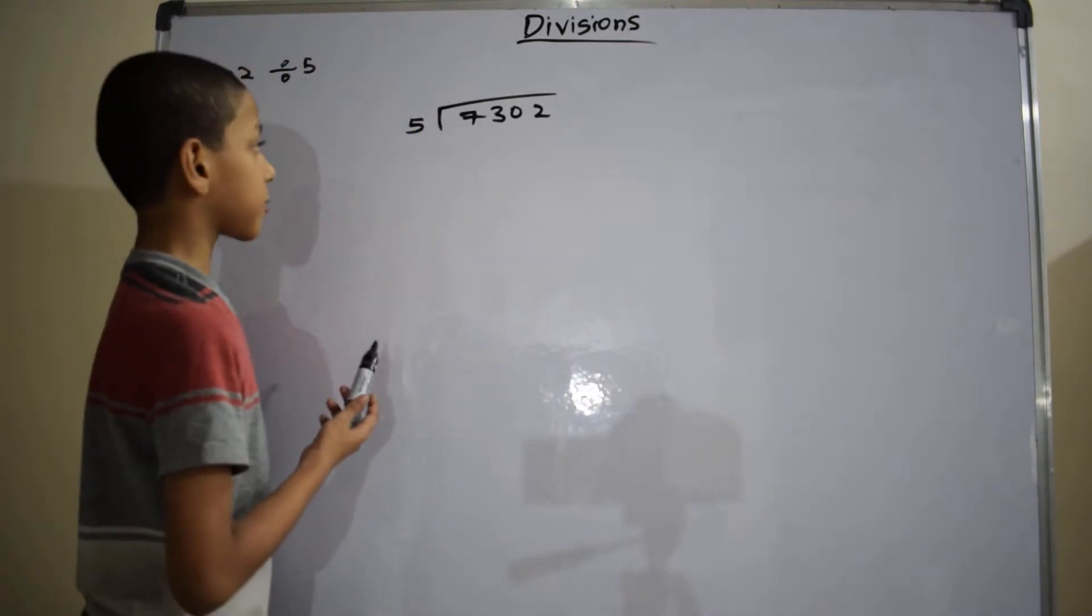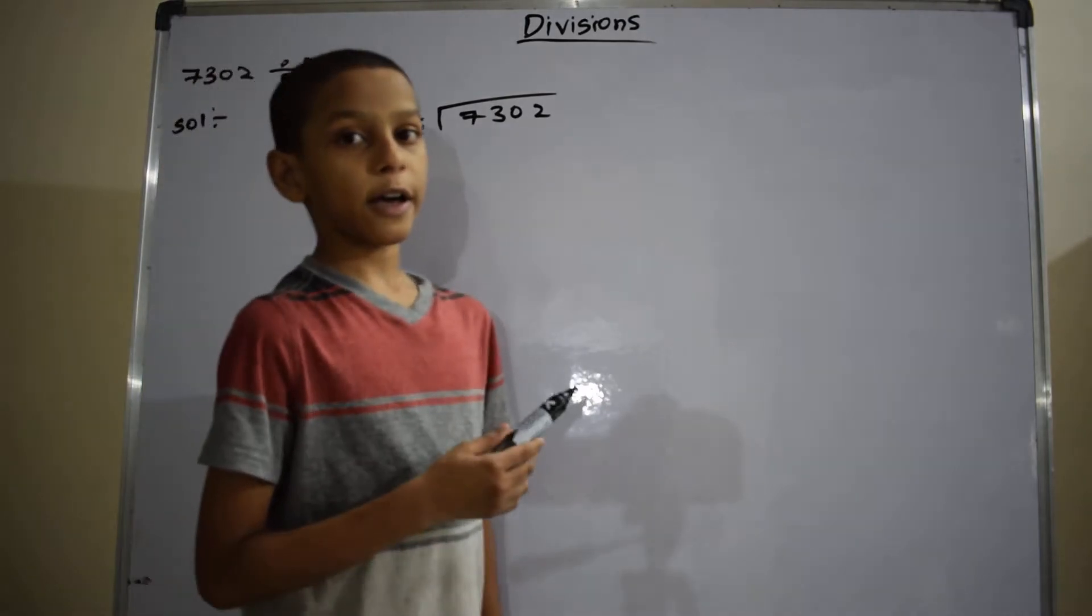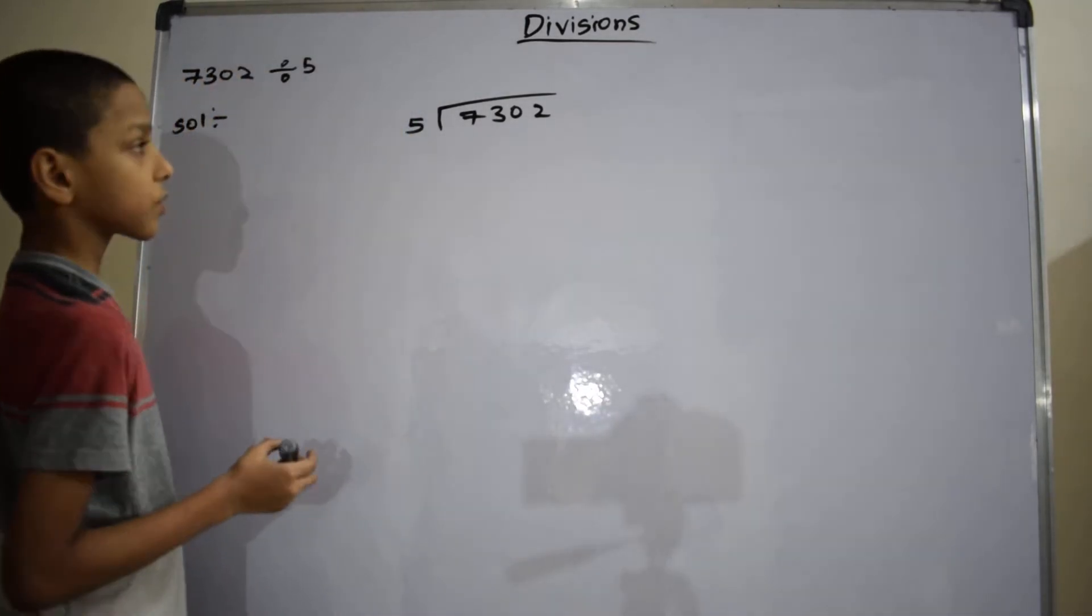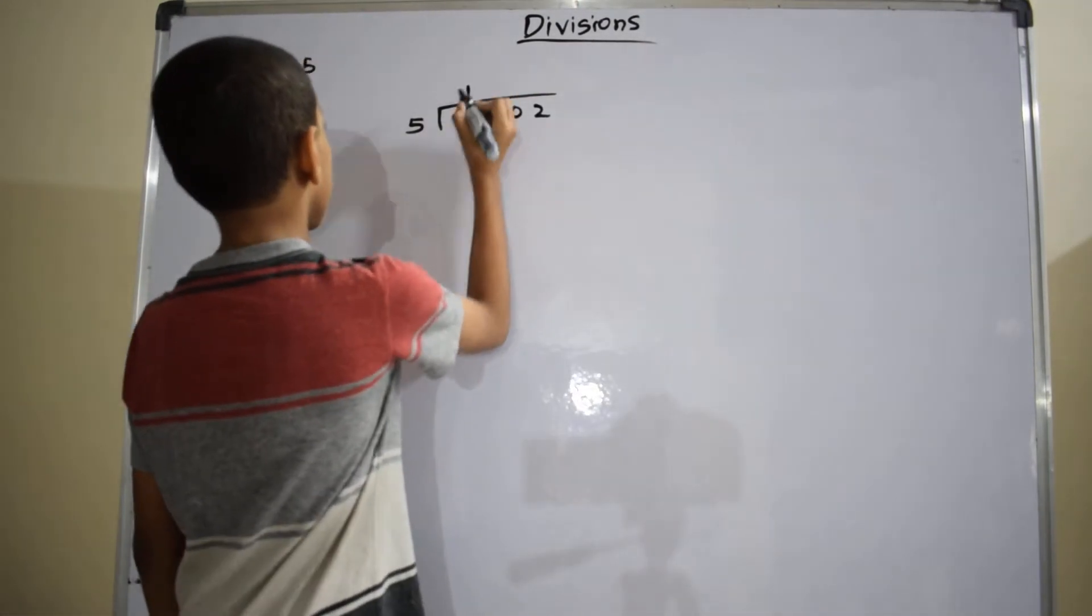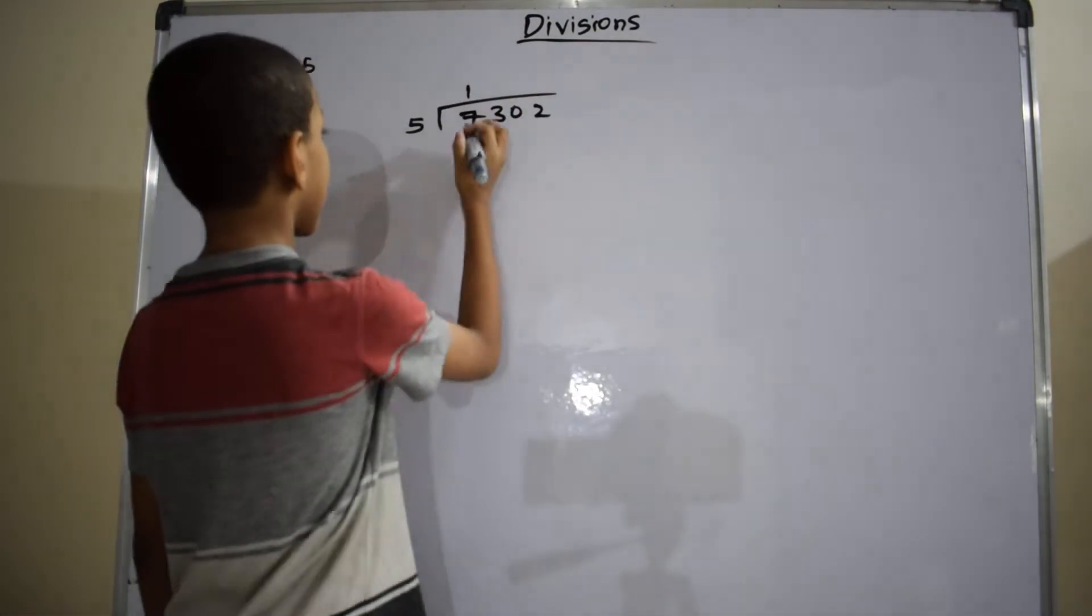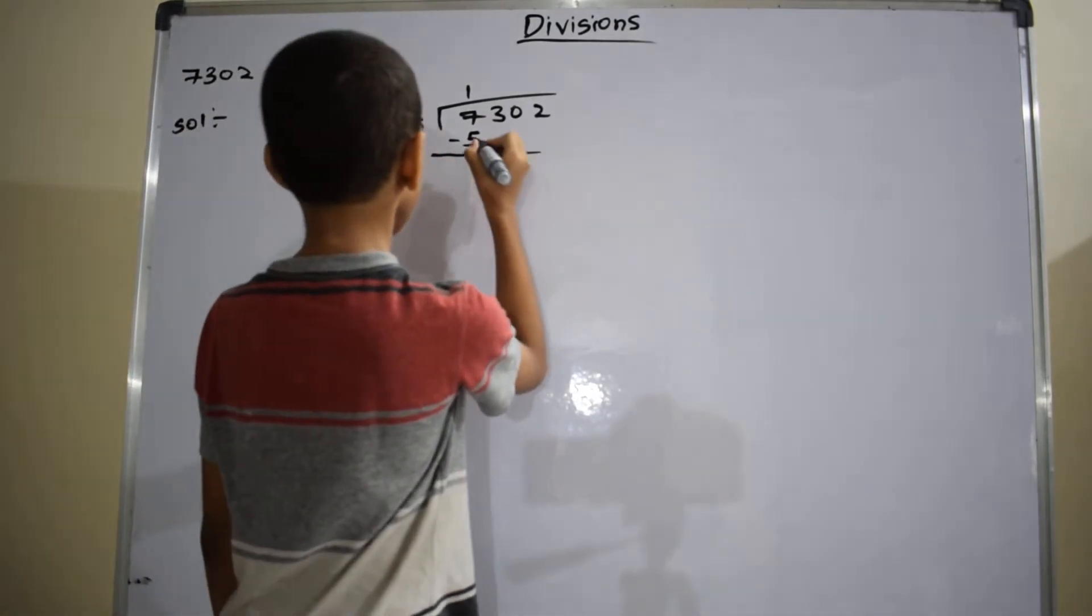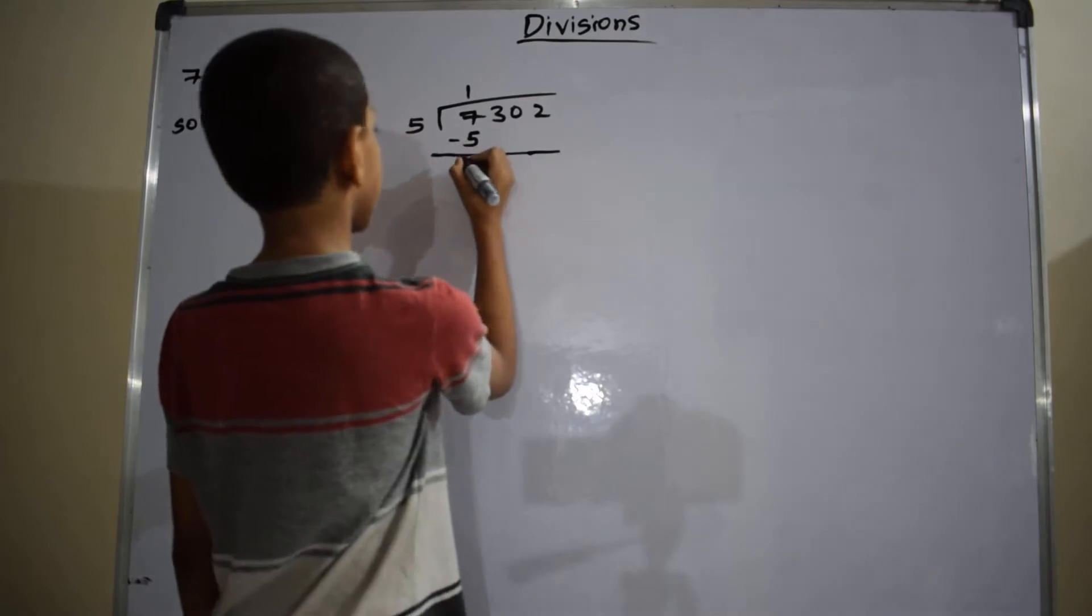By using the multiplication table, recite the table of 5 mentally until you get 7. So one times 5 gives 5. Write the quotient 1 here and write 5 below the dividend and subtract it. 7 minus 5 equals 2.